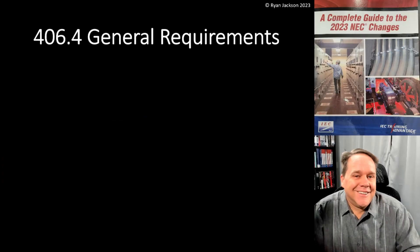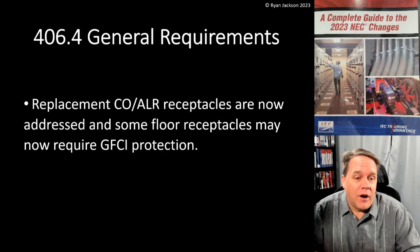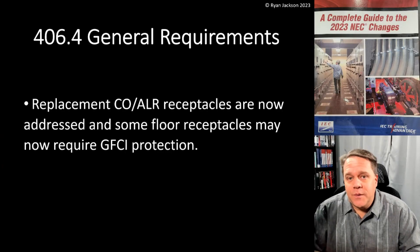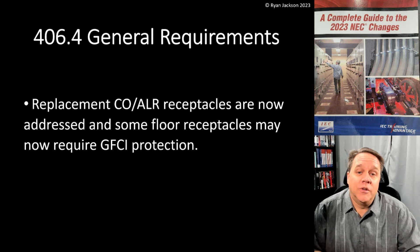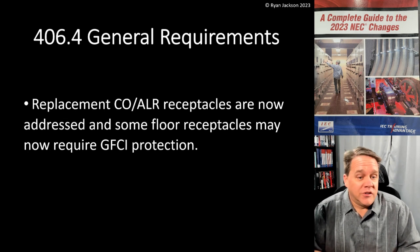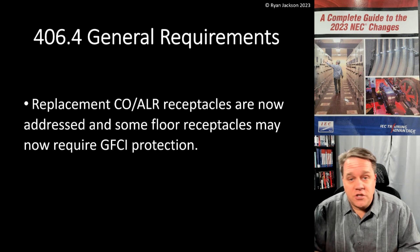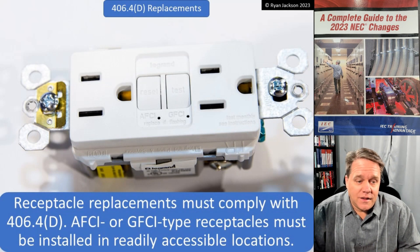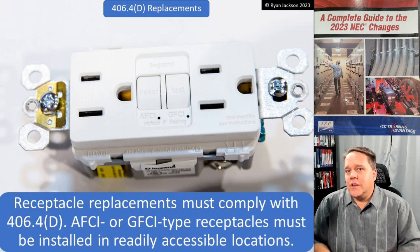We're still in Article 406 — I think we've got three more videos before we get out of this article. 406 covers receptacles, cord connectors, and attachment plugs. 406.4 general requirements: replacement CO/ALR receptacles are now addressed, and some floor receptacles may now require GFCI protection.